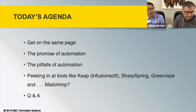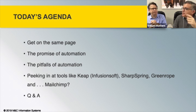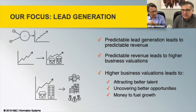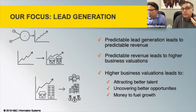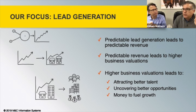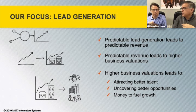Marketing automation is a pretty broad term. We hear a lot about it — what is actually automated? Not videos or things like that, but certain specific things. The reason we're into this is because predictable lead generation is our business. We're talking about being able to forecast not just revenue but the number of leads coming through, which we've been striving for going on 20 years. Predictable revenue leads to higher business valuations — your business is worth more to banks, potential buyers, anyone — and lets you attract better talent and uncover better opportunities.